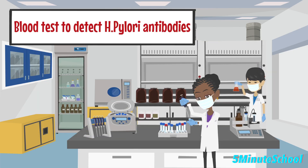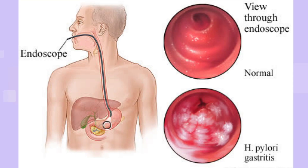A blood test can also be done, where a blood sample is taken and tested for the presence of H. pylori antibodies, which indicates past or current infection. Lastly, an endoscopy or biopsy can be done — an endoscope is used to visualize the stomach lining, and a small tissue sample can be taken to detect H. pylori and assess for any damage.